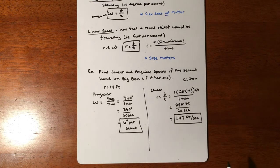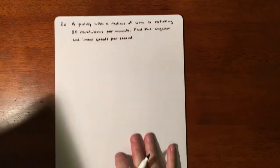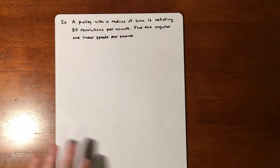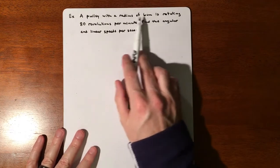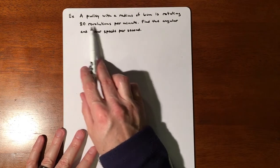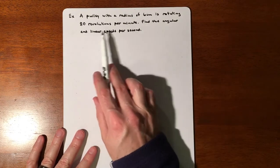Second example: we got a pulley with a radius of 6 centimeters, rotating 80 revolutions per minute. We're going to find the angular and linear speeds per second.